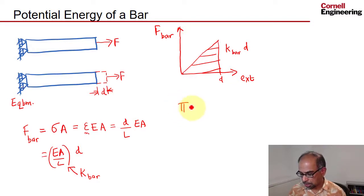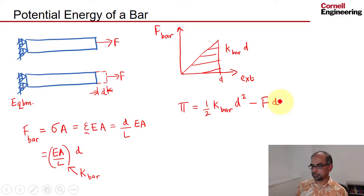So we'll say π for the bar is half K_bar D squared, and then I have to subtract out the potential energy I have lost from the external force. You can see how it mimics what we saw for the spring.